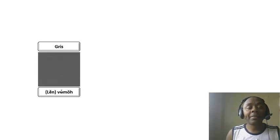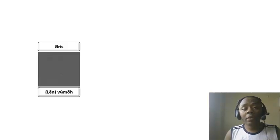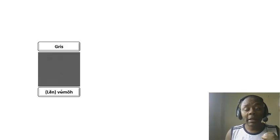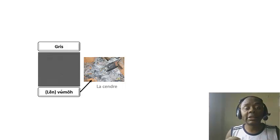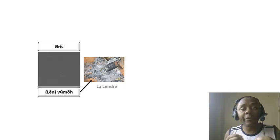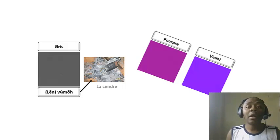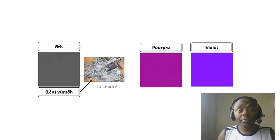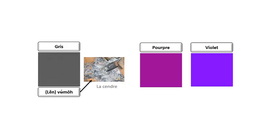La couleur grise s'appelle quoi en langue fefé ? Vous pouvez l'imaginer. La couleur grise c'est le vumot. Vu c'est la cendre, mot c'est le feu, vumot c'est la cendre du feu. Lève mot signifie donc littéralement la cendre du feu. En fefé, on appelle la couleur grise lève mot. Le pourpe ou le violet s'appelle en langue fefé nkeu nkeu.